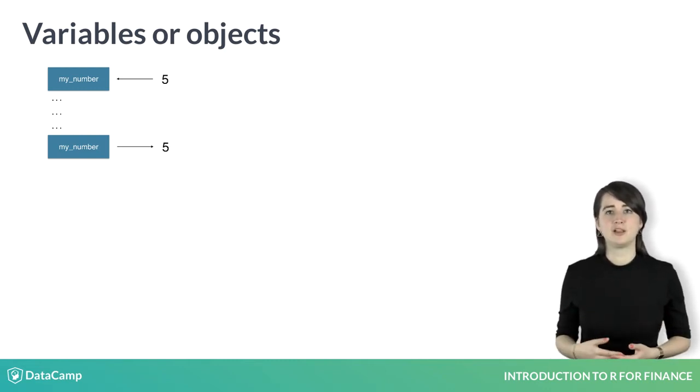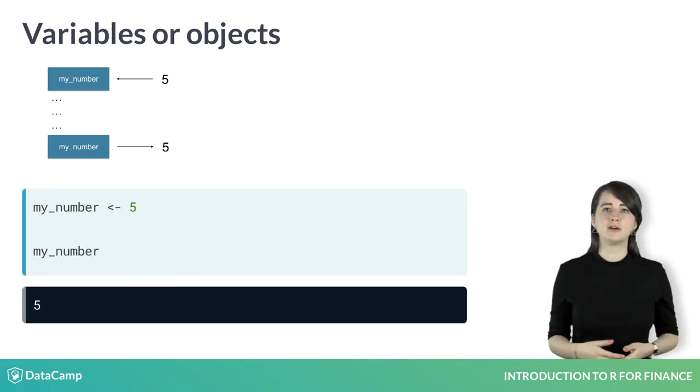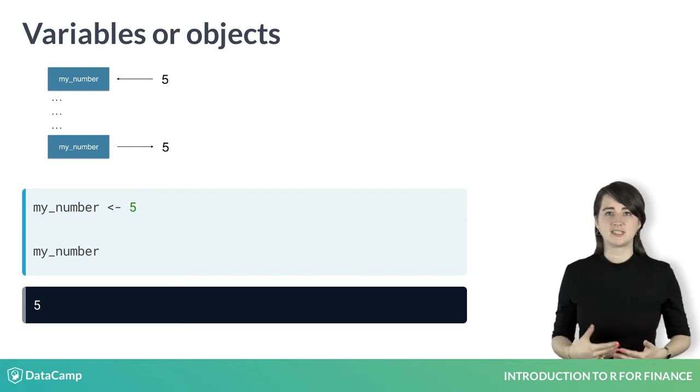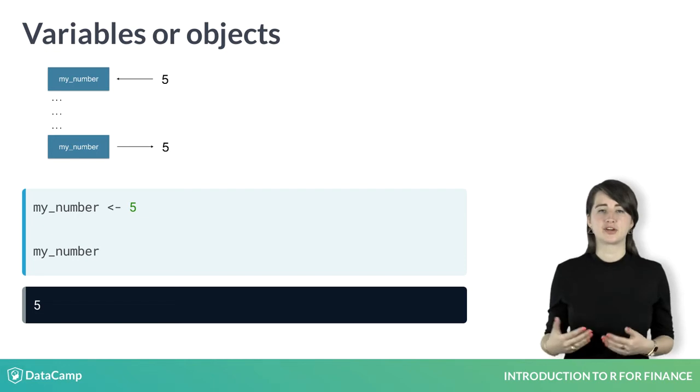What would this example look like in the R console? Type my number, assign 5 to it, and press enter. When you want to access the data in my number, type in its name, press enter again, and R returns 5.